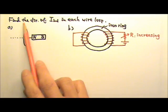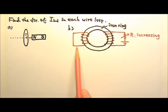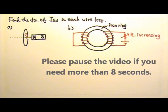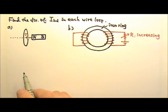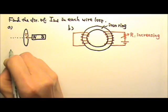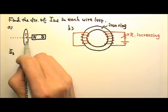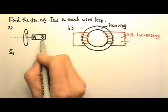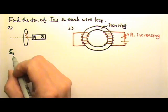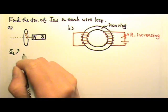Let's find the direction of the induced current in each wire loop. To find the direction of the induced current, first we look at whether the magnetic flux through the loop is increasing or decreasing. Since the magnet is being pushed into the wire loop, the magnetic flux is increasing.